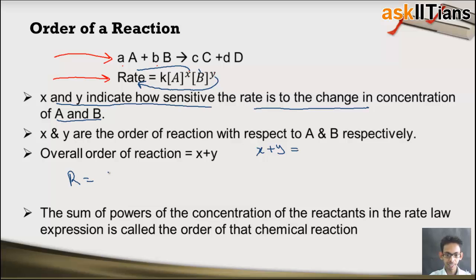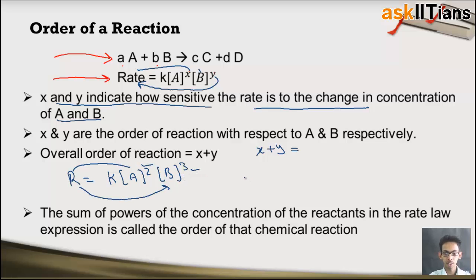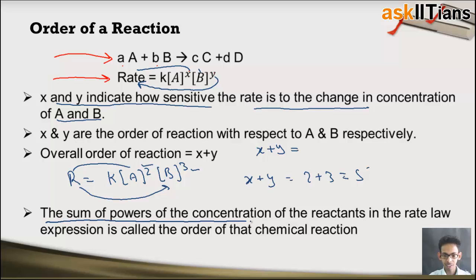For example, if the power for A is 2 and for B it is 3, this indicates that the order of reaction with respect to A is 2 and the order of reaction with respect to B is 3, while the overall order of reaction is x plus y, which is 2 plus 3, which is 5. So the sum of powers of the concentration of the reactants in the rate law expression is called the order of that chemical reaction.